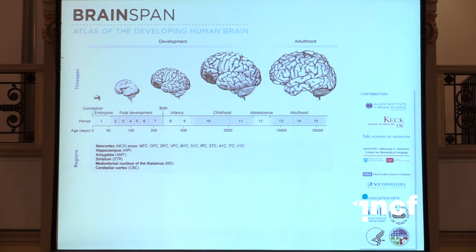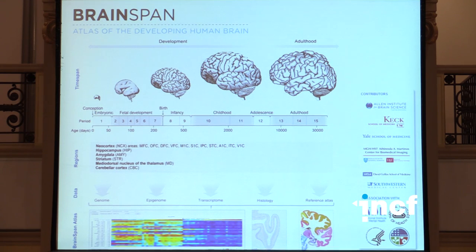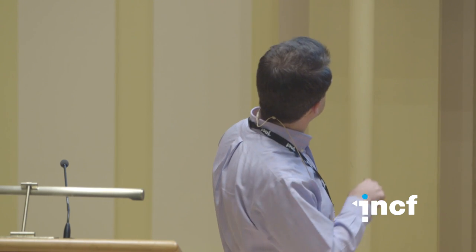My favorite part of the brain is the neocortex, so we sampled 11 neocortical areas. We were guided by two principles: functional importance — four areas of prefrontal cortex, all major sensory areas, and areas involved in association such as temporal and parietal — and the ability to dissect them. These were dissected from post-mortem human brains from clinically unremarkable donors. In addition, hippocampus, amygdala, striatum, mediodorsal nucleus of the thalamus, and cerebellum were included. We looked at gene expression, transcriptome dynamics, reference atlas histology, epigenome, and genome, all accessible via the BrainSpan atlas.